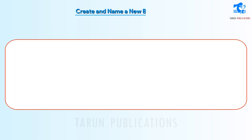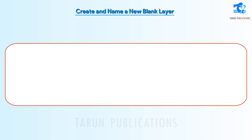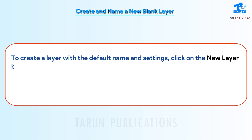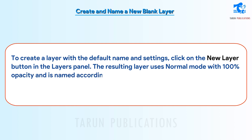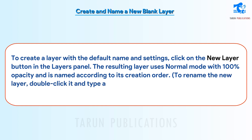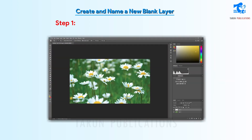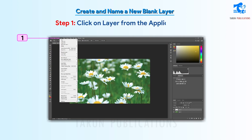Create and name a new blank layer. To create a layer with the default name and settings, click on the New Layer button in the Layers panel. The resulting layer uses normal mode with 100% opacity and is named according to its creation order. To rename the new layer, double-click it and type a new name. Step 1: Click on Layer from the application bar. Step 2: Select New option from the menu.